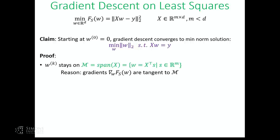The way we argue it: first, the iterates stay in the span of the data — a manifold that in this case is flat. To verify the solution stays in this manifold, we note that at any point on this manifold the gradient is tangent to it. So if I'm already on the manifold, taking an infinitesimal gradient step keeps me on it. Since the manifold is flat, this even works with finite steps of any step size.